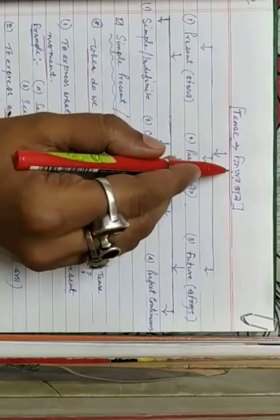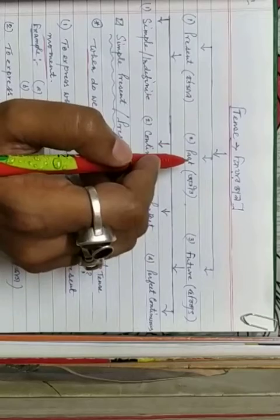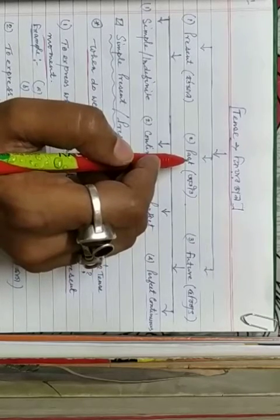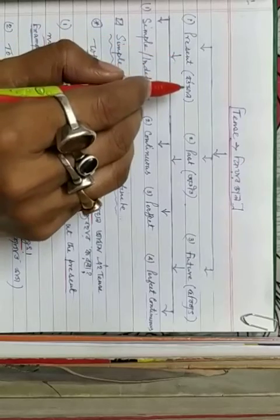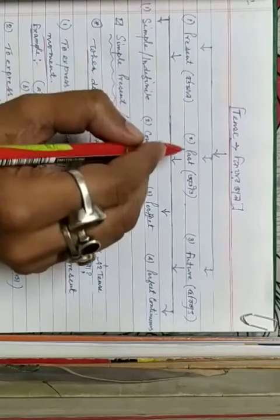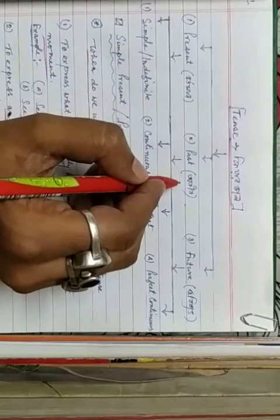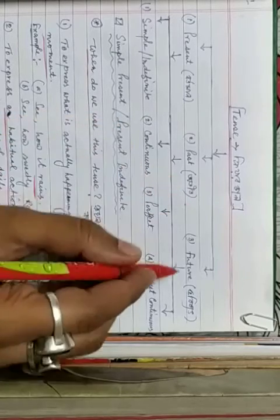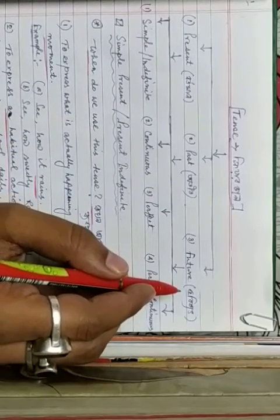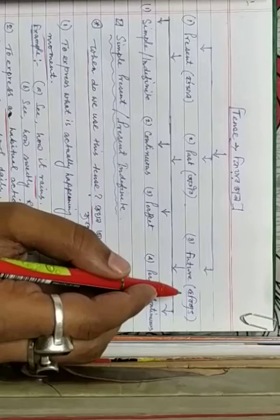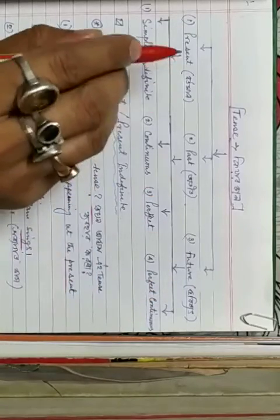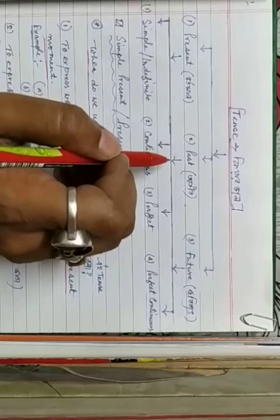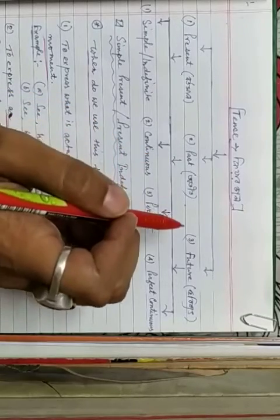The tense — when we talk about tense, there are 3 times we have to know: Present, which is the first time; Past, which is the second time; and the Future, which is the third time. Present is today, Past is yesterday, Future is tomorrow.